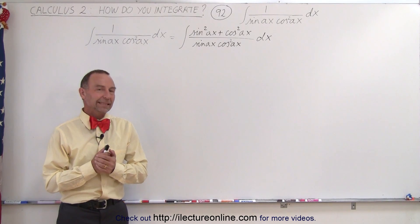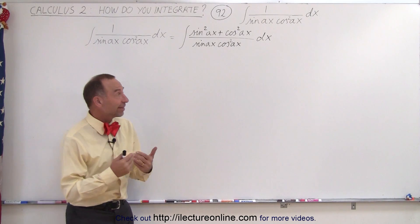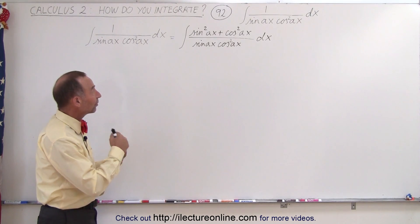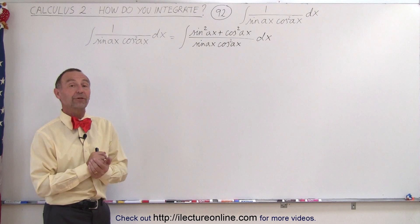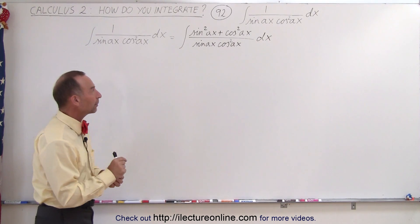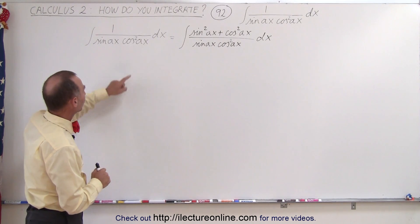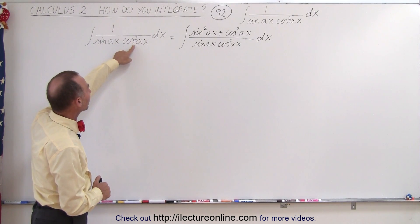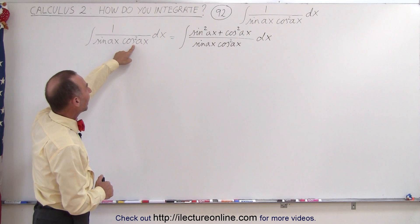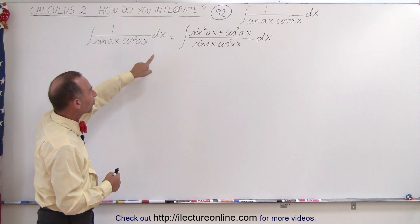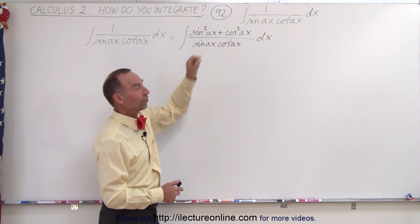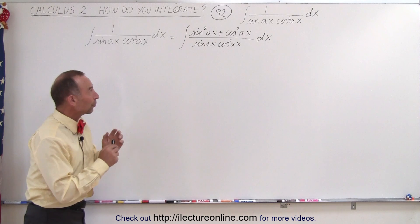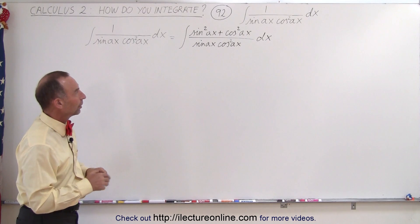Welcome to my lecture online. In this next example, notice that one of the trigonometric functions in the denominator is actually squared, so we have a cosine squared here. We're still going to use the same trick. Now it gets a little bit more complicated, but it will still work.